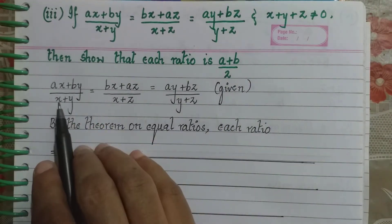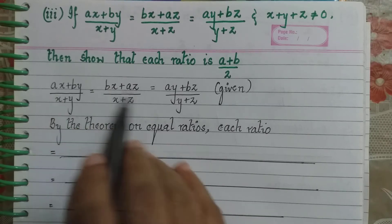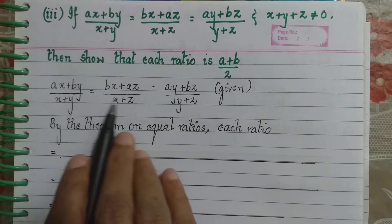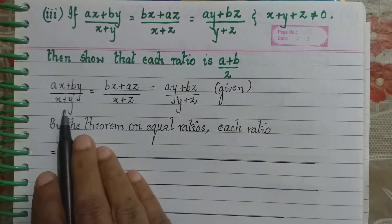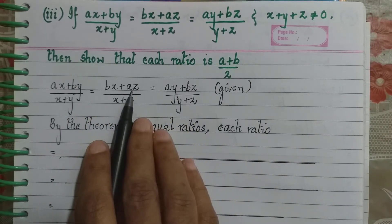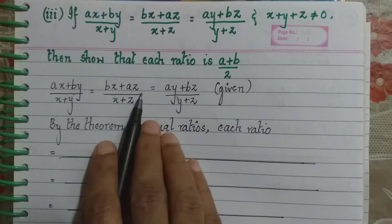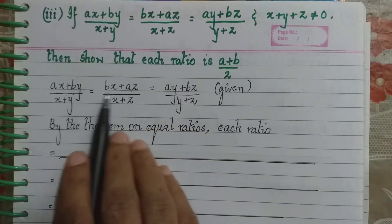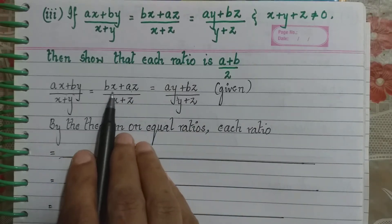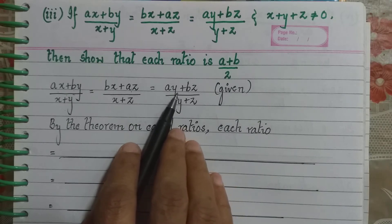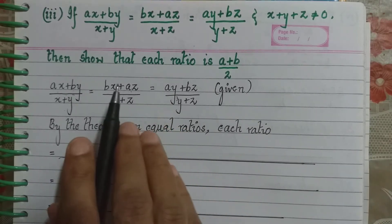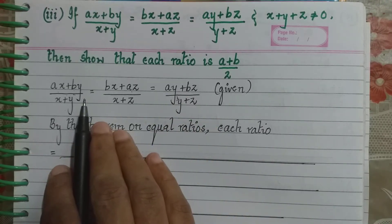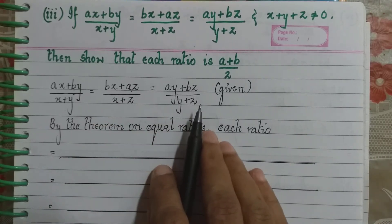If you look at all the A terms in the numerators, we have AX, AZ, and AY. If I add all three ratios together, I will have AX + AZ + AY. Taking A common out, I get A(X + Y + Z). Similarly for the B terms — BX, BY, BZ — taking B common out gives B(X + Y + Z). So the combined numerator is A(X + Y + Z) + B(X + Y + Z).